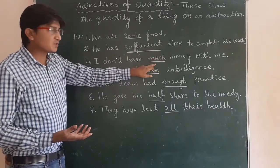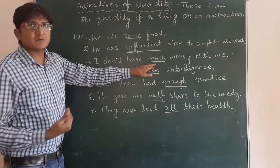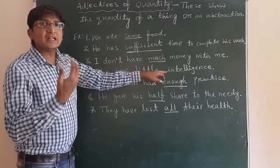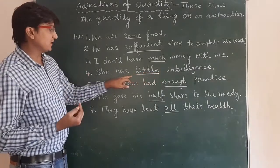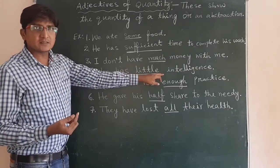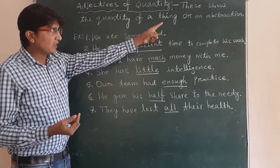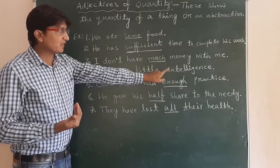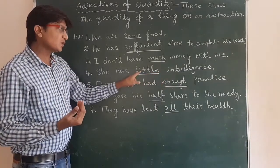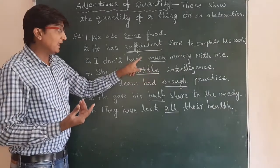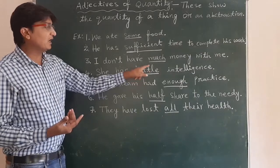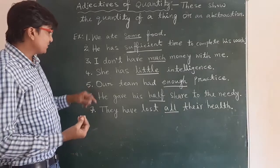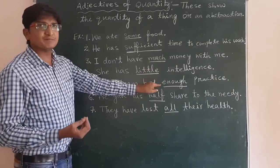Fourth: 'She has little intelligence.' Intelligence is an abstraction — we can't see anybody's intelligence. So how much intelligence? Little intelligence. That's why 'little' is an adjective of quantity. Next: 'Our team had enough practice.' How much practice? Enough — so 'enough' is an adjective of quantity.